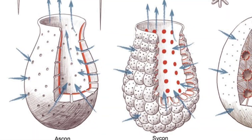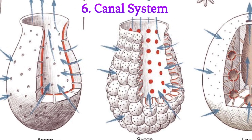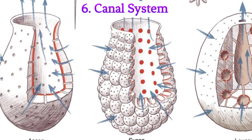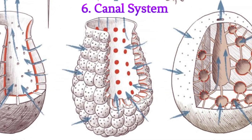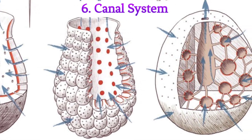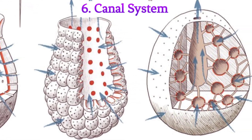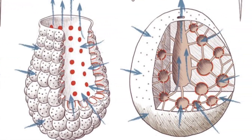Point 6: Canal system. Sponges are renowned for their unique canal system. This intricate network of canals and chambers allows for efficient water flow, aiding in filter-feeding.